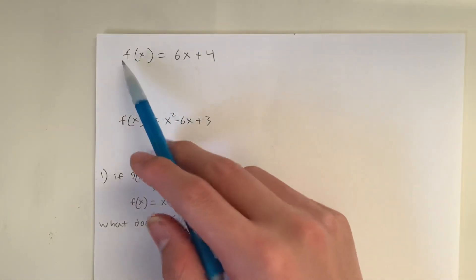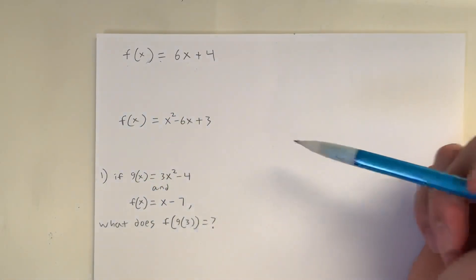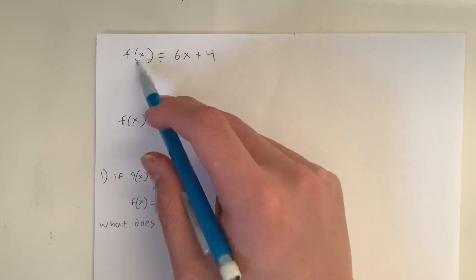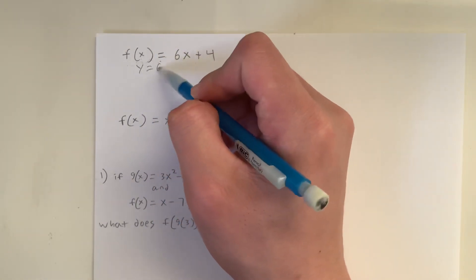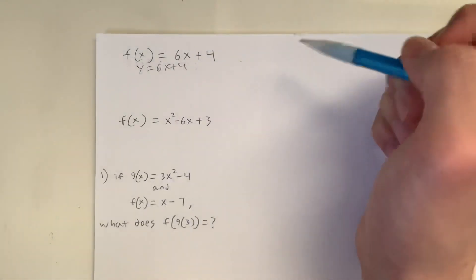Basically, functions are defined usually as f(x) equals 6x plus 4. It's always something x is equal to this. You could also treat it as y equals 6x plus 4. You're more familiar with that.